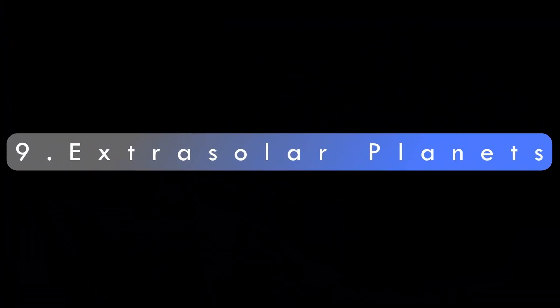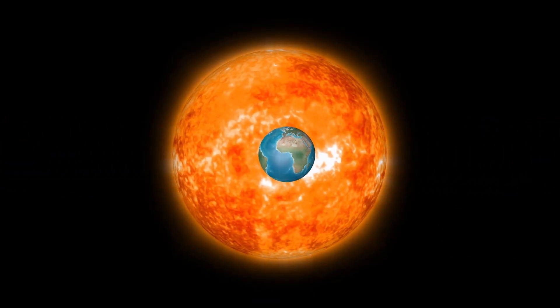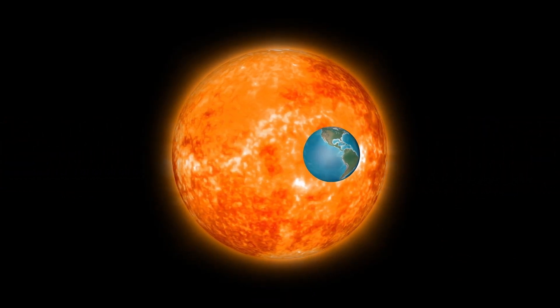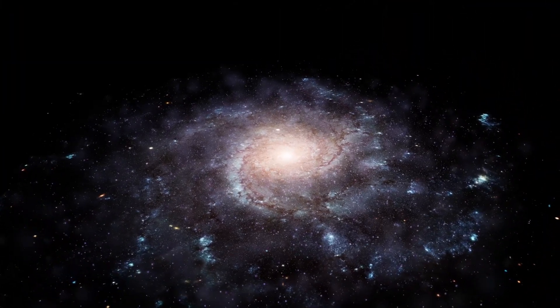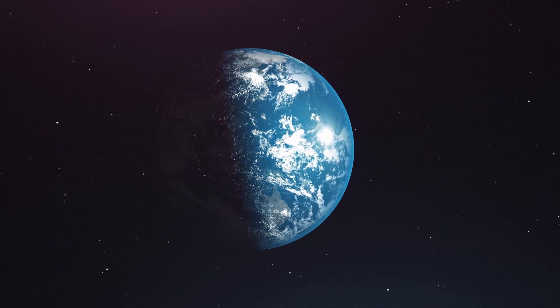Extrasolar planets: roughly one in five sun-like stars have an earth-sized planet within the habitable distance from that star. Assuming there are 200 billion stars in the Milky Way, that would mean 11 billion habitable earth-like planets in the Milky Way alone.